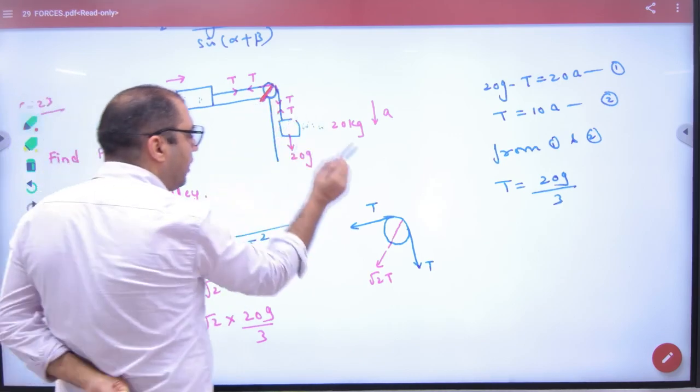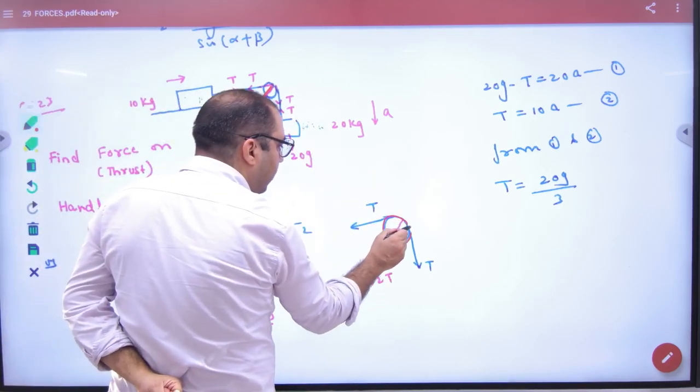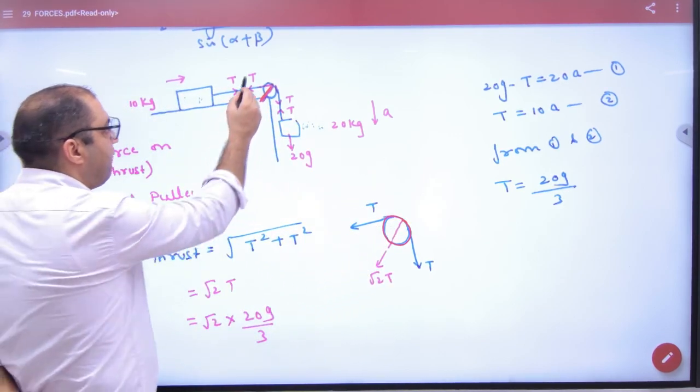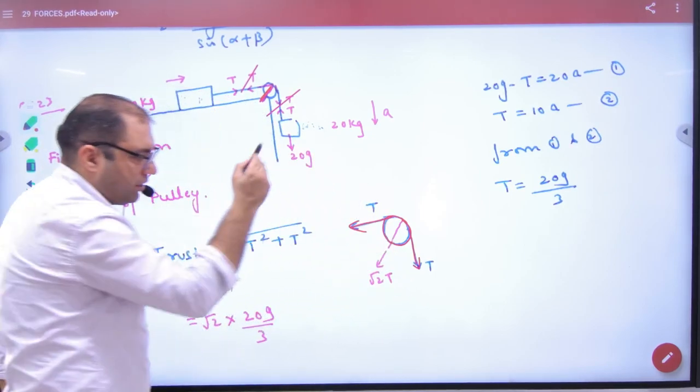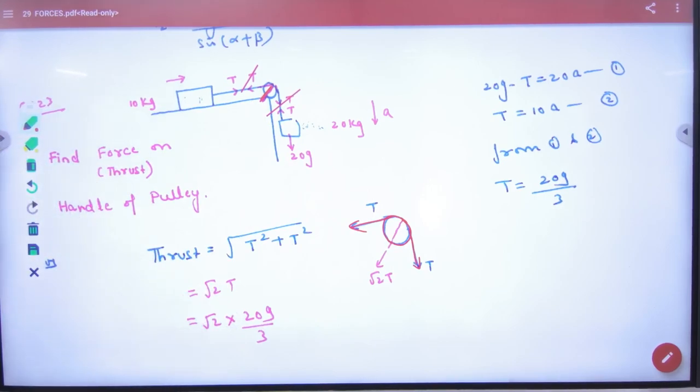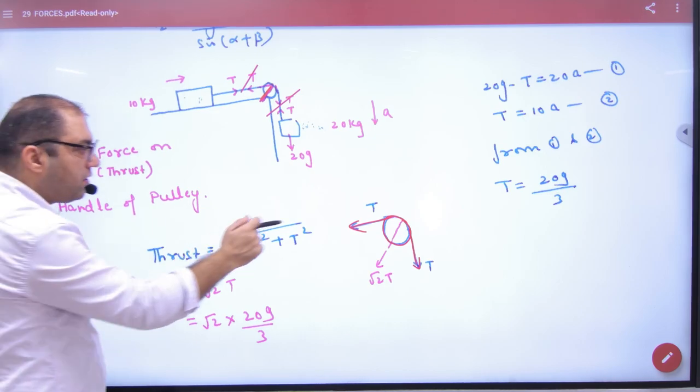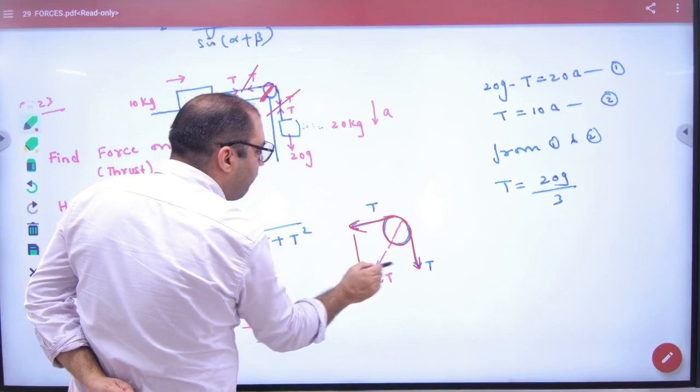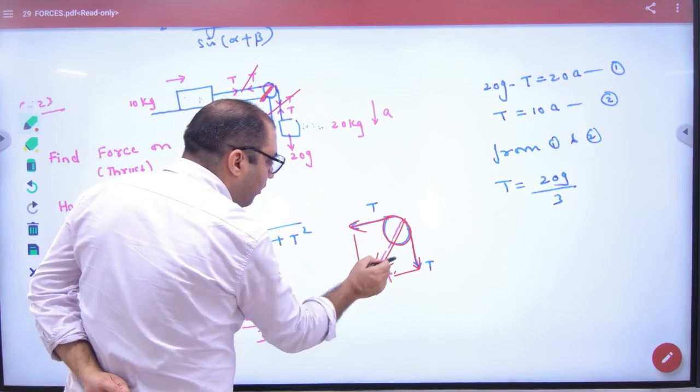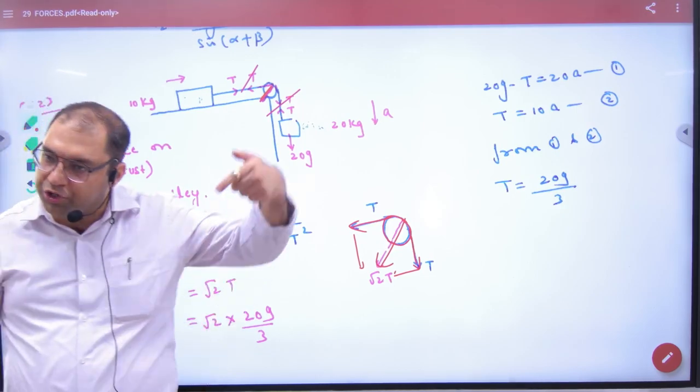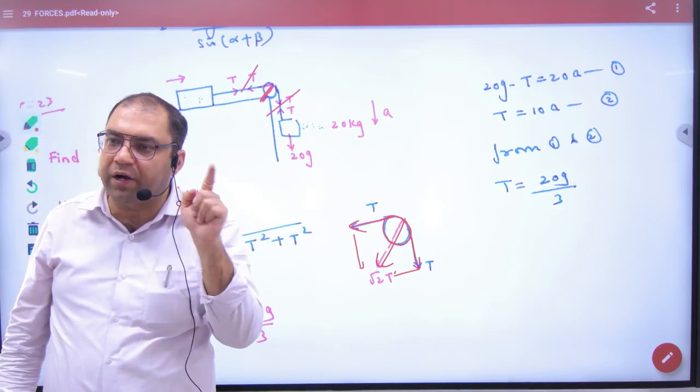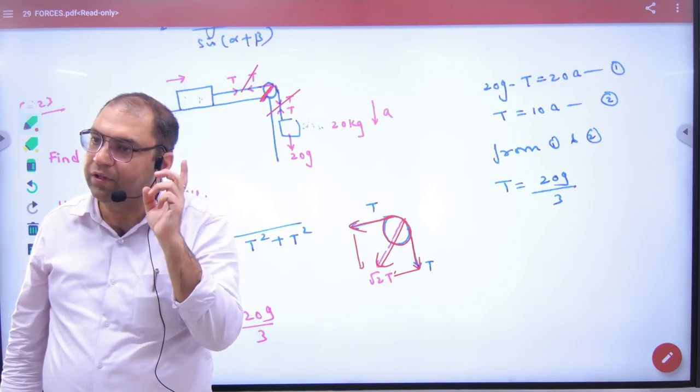If we draw the free body diagram of the pulley, on the left and right there are tension forces T. So on this pulley there are two forces, both equal to T. By parallelogram law of vector addition, the resultant force is root 2 times T. This whole force goes into the rod.